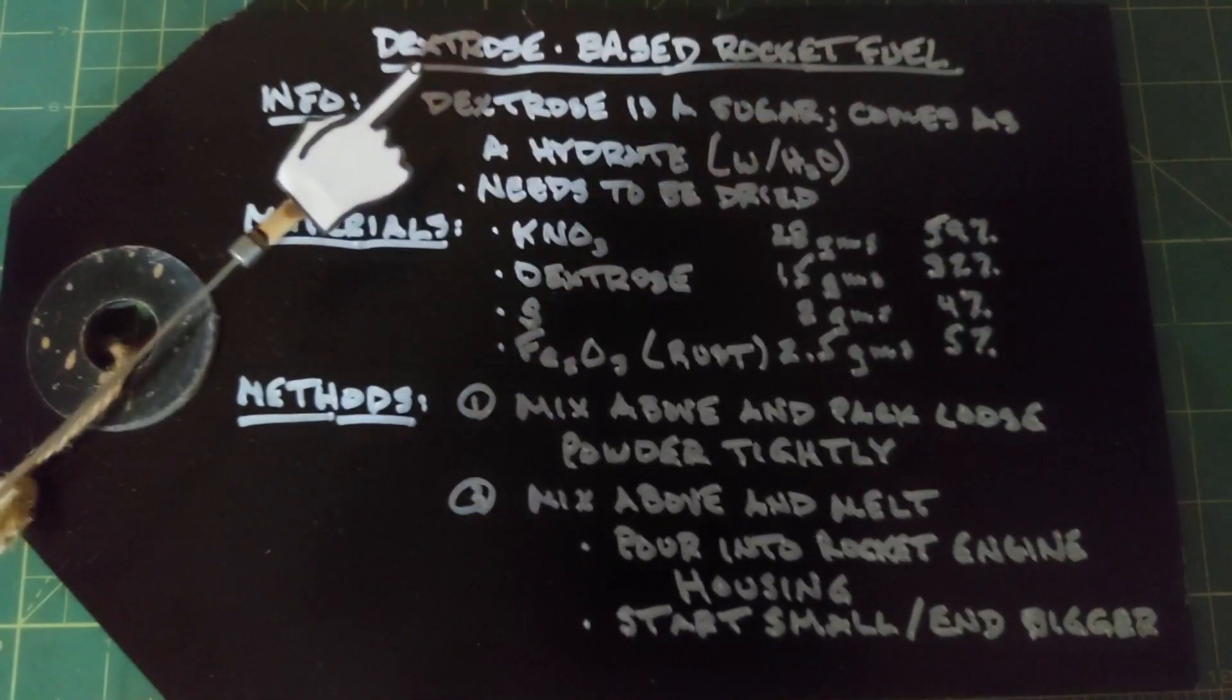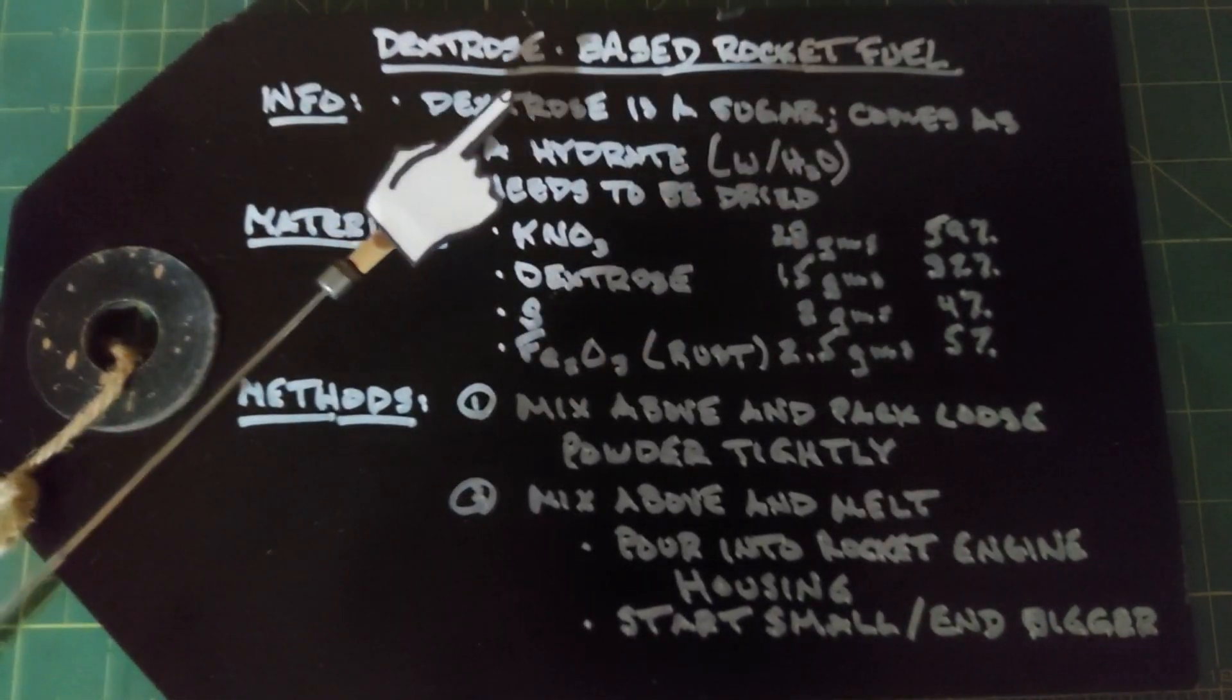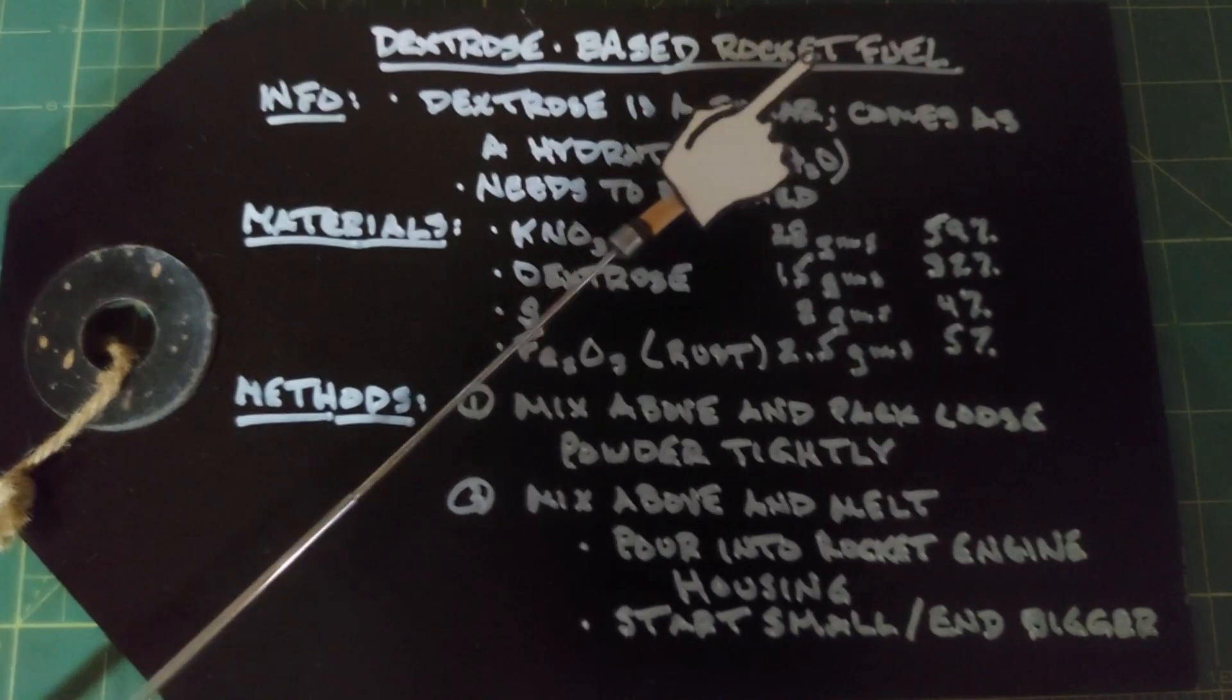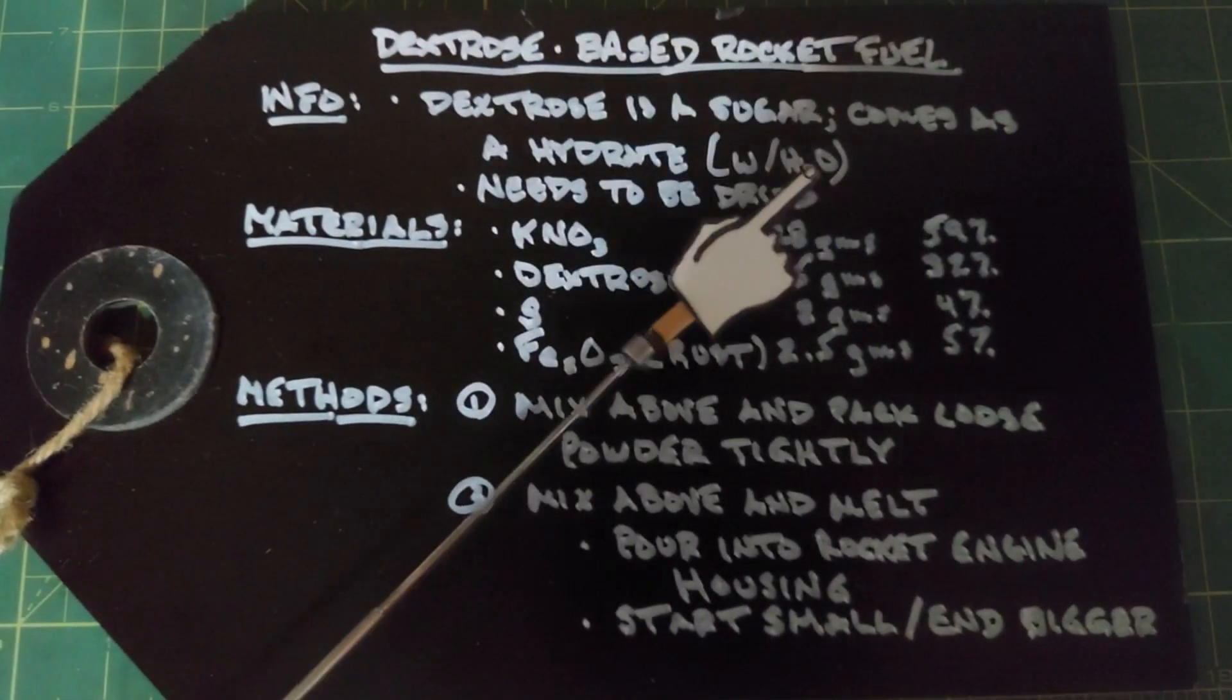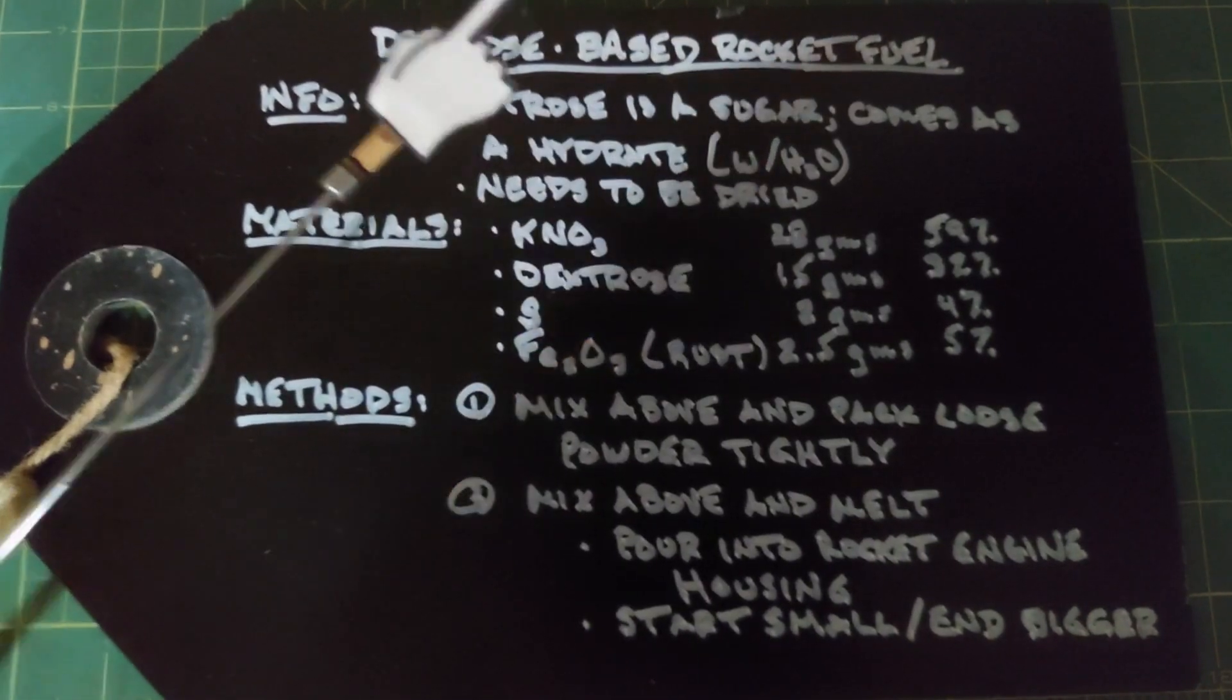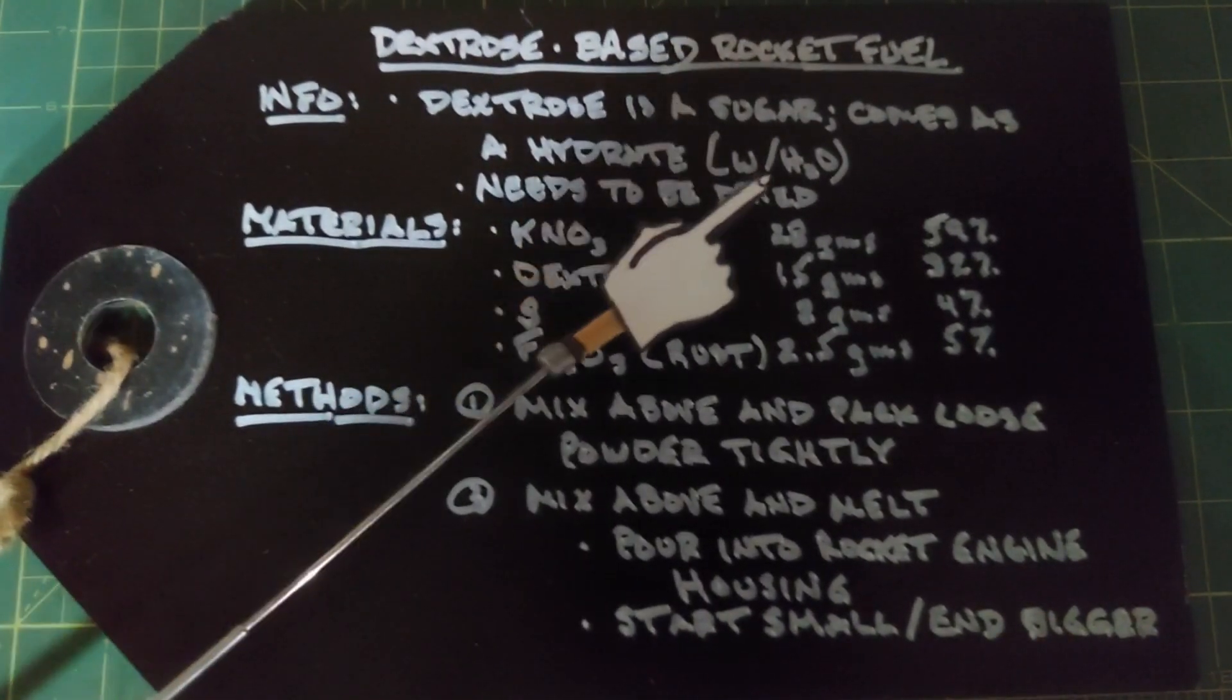In this video we're going to look at making dextrose-based rocket fuel. Dextrose is a sugar, but this sugar comes as a hydrate, so in the molecule of dextrose is water and that needs to be dried before we can use it.